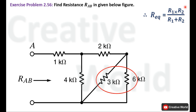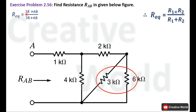In this case R1 is 3 kΩ and R2 is 6 kΩ. Placing the values: the product of 3 kΩ and 6 kΩ divided by the sum of 3 kΩ and 6 kΩ gives 18k² divided by 9k. Canceling k, 18 divided by 9 gives an answer of 2 kΩ.